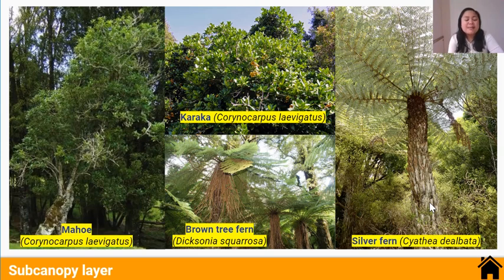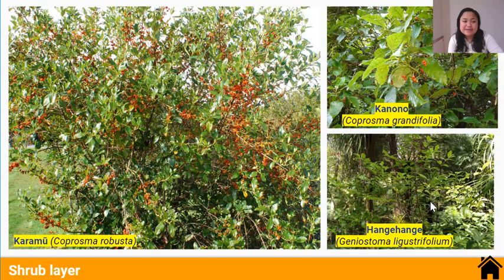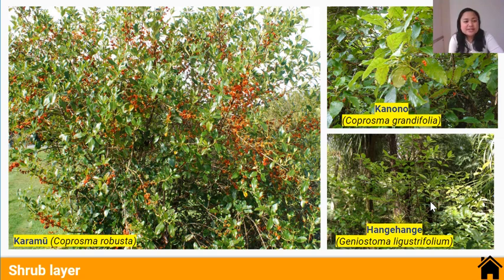The shrub layer is the second layer closest to the ground. The foliage of trees from the layers above greatly shelters the shrub layer from sun and wind. Therefore, trees in the shrub layer experience low light intensity, low temperatures, low wind strength, and high humidity. If you've ever been on a bush walk around the Waitakere Ranges, you'll notice it's quite shaded, cool, still, and pretty humid. Examples of plants found in this layer are Karamu, Kanono, and Hangihange, as well as seedlings, young trees, and tree ferns.